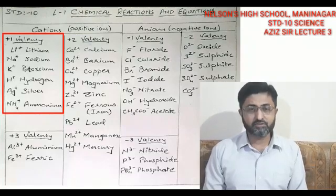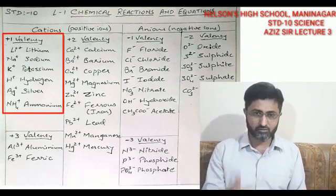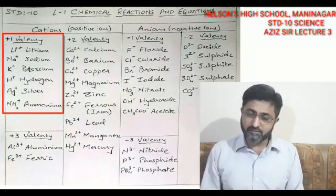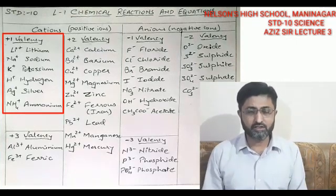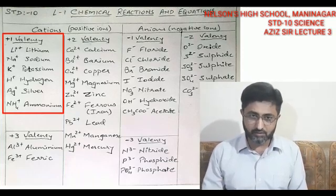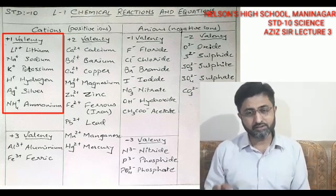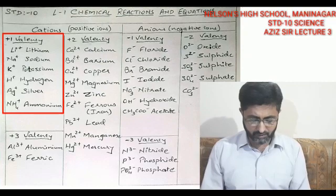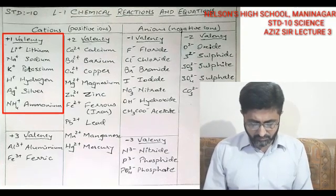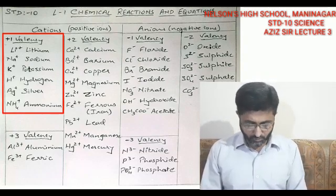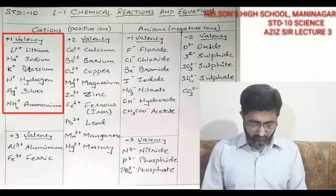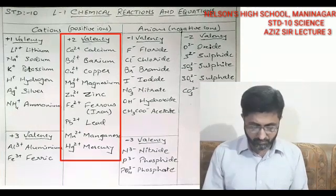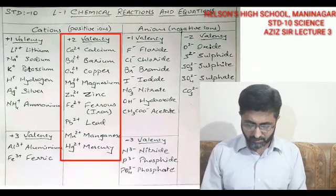Plus one valency means only one electron is lost, so the sign is plus one (written simply as +). The plus one valency elements are: Li+ is lithium, Na+ is sodium, K+ is potassium, H+ is hydrogen, Ag+ is silver, and NH4+ is ammonium. These are the atoms with plus one valency.